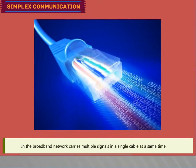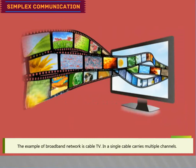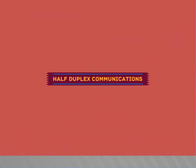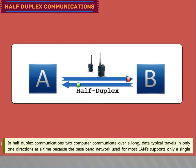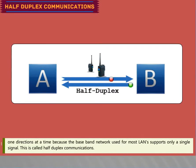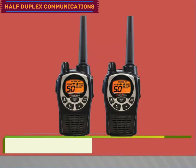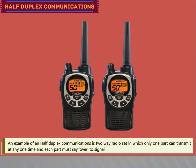In the broadband network, multiple signals are carried in a single cable at the same time; an example is cable TV. In half-duplex communications, data typically travels in only one direction at a time because baseband networks used for most LANs support only a single signal. An example of half-duplex is a two-way radio set where only one party can transmit at any one time and must say 'over' to signal.